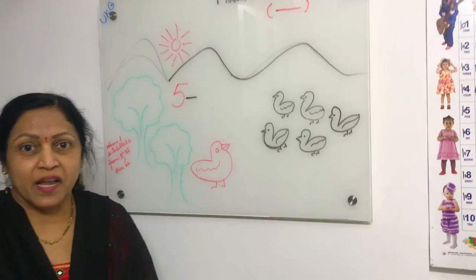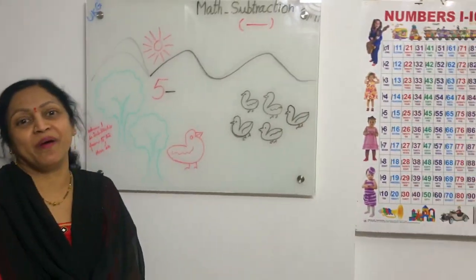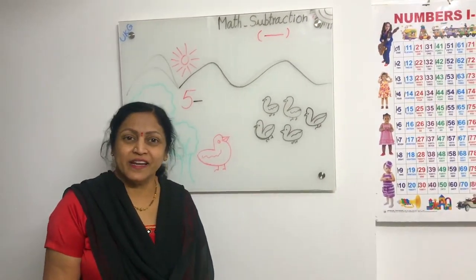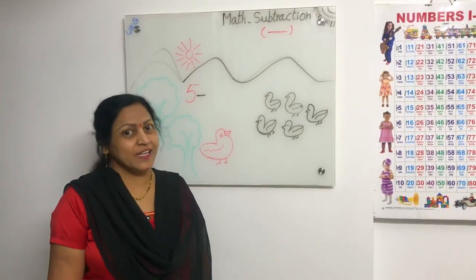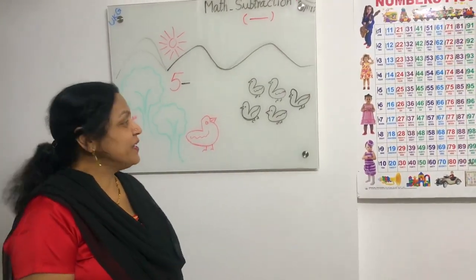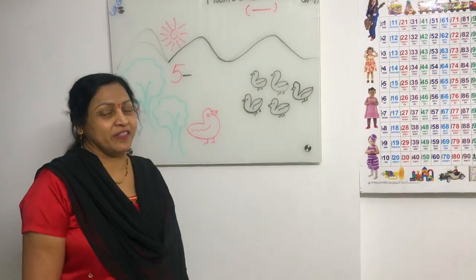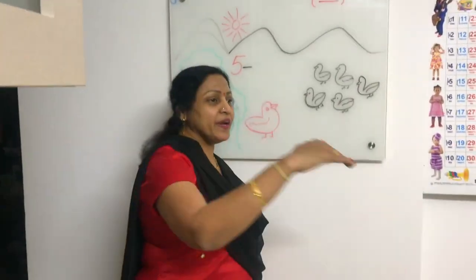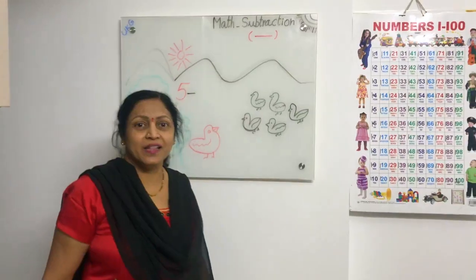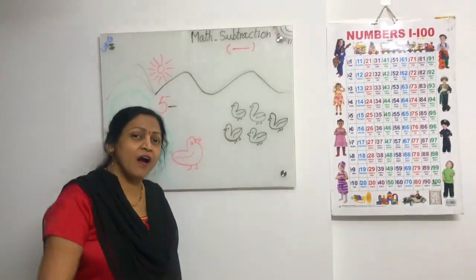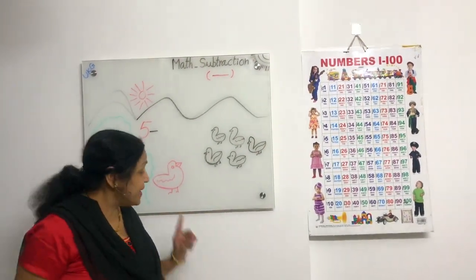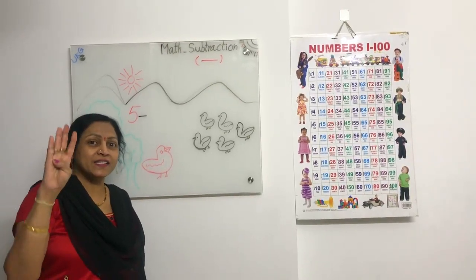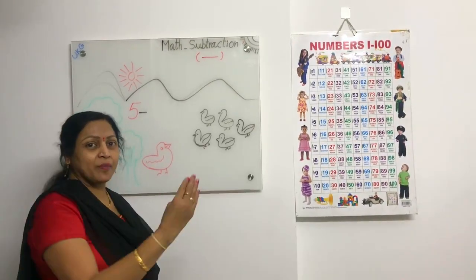Now I am telling one beautiful rhyme on subtraction. Okay children, you also follow along. Five little ducks went out one day, over the hills and far away. Mother duck said quack, quack, quack. Four little ducks came back.